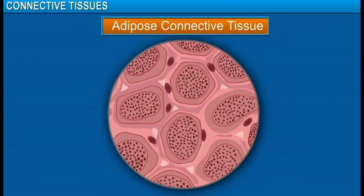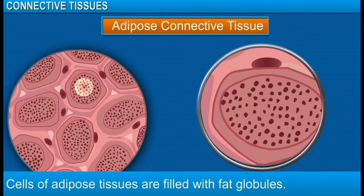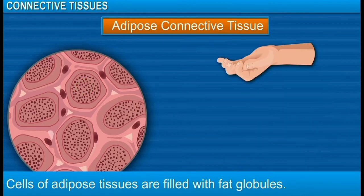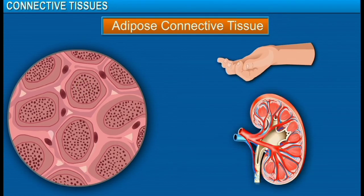Here's the adipose connective tissue. Cells of this tissue are filled with fat globules. It is found below the skin and around internal organs like kidneys and acts as an insulator.